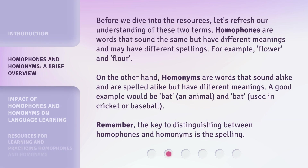Before we dive in, let's refresh our understanding of these two terms. Homophones are words that sound the same but have different meanings and may have different spellings — for example, flour and flower. On the other hand, homonyms are words that sound alike and are spelled alike but have different meanings. A good example would be bat, an animal, and bat, used in cricket or baseball. The key to distinguishing between homophones and homonyms is the spelling.